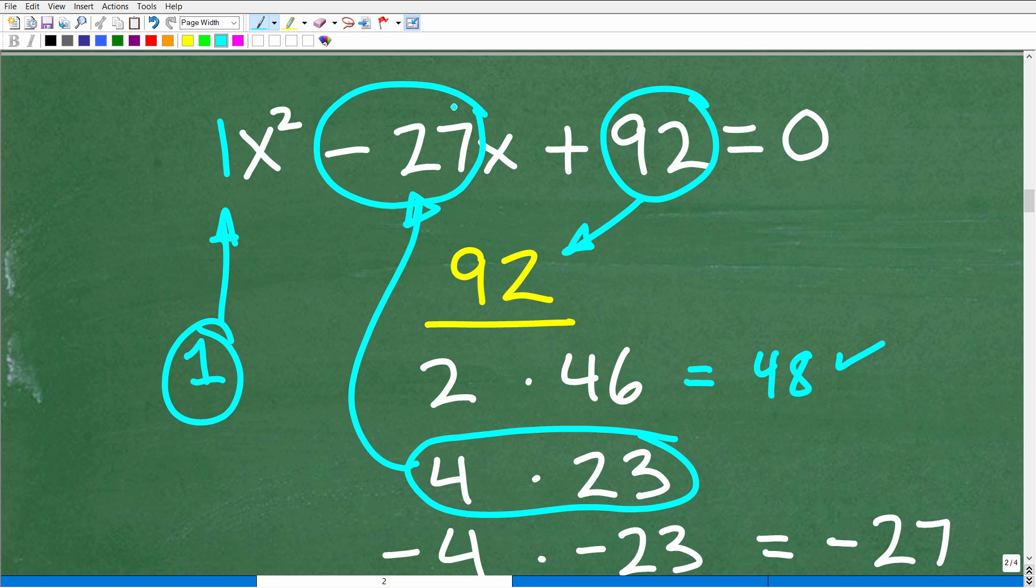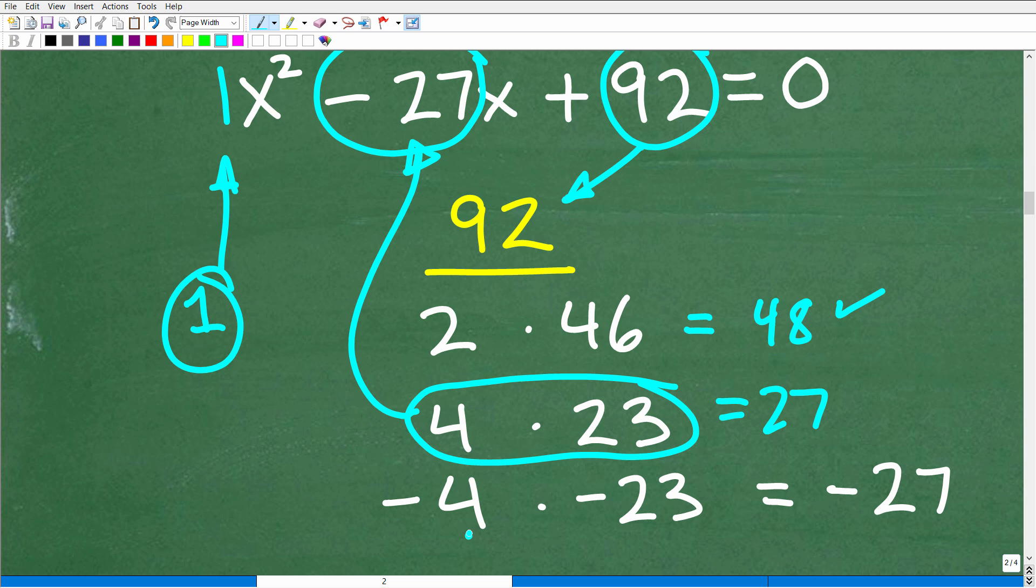I'm like, Hey, four and 23, what I'm looking for is pairs of factors that add up to this middle coefficient. Okay. And now that's negative 27. So four and 23 add up to 27. That's not good. But factors of 92 is also negative four times negative 23. A negative times a negative is a positive. So negative four times negative 23 is indeed positive 92.